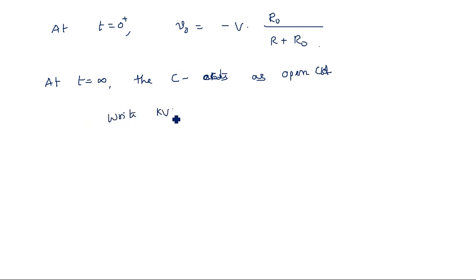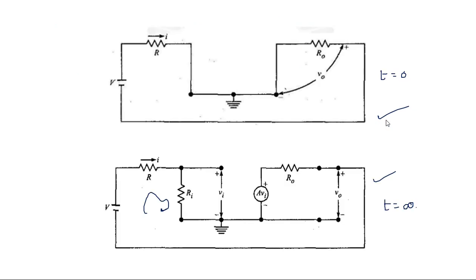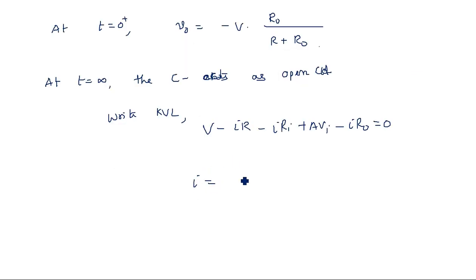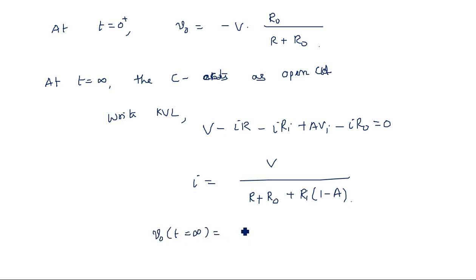Writing KVL: minus I times R plus A times Vi minus I times R0 is equal to 0. Taking I as common: V divided by R plus R0 plus Ri times (1 minus A) equals the expression for current. Therefore, v0 at t equal to infinity equals V times (A times Ri plus R0) divided by (R plus R0 plus Ri times (1 minus A)).